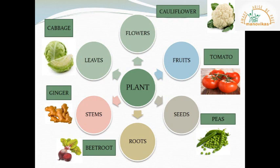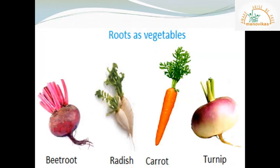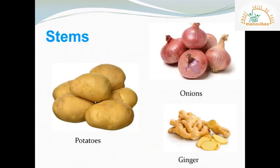Let us learn more about the different parts of a plant eaten as vegetables. Some examples of roots eaten as vegetables are beetroot, radish, carrot, turnip, etc. Potatoes, ginger and onion are examples of stems that we eat as vegetables. These stems normally grow underground.